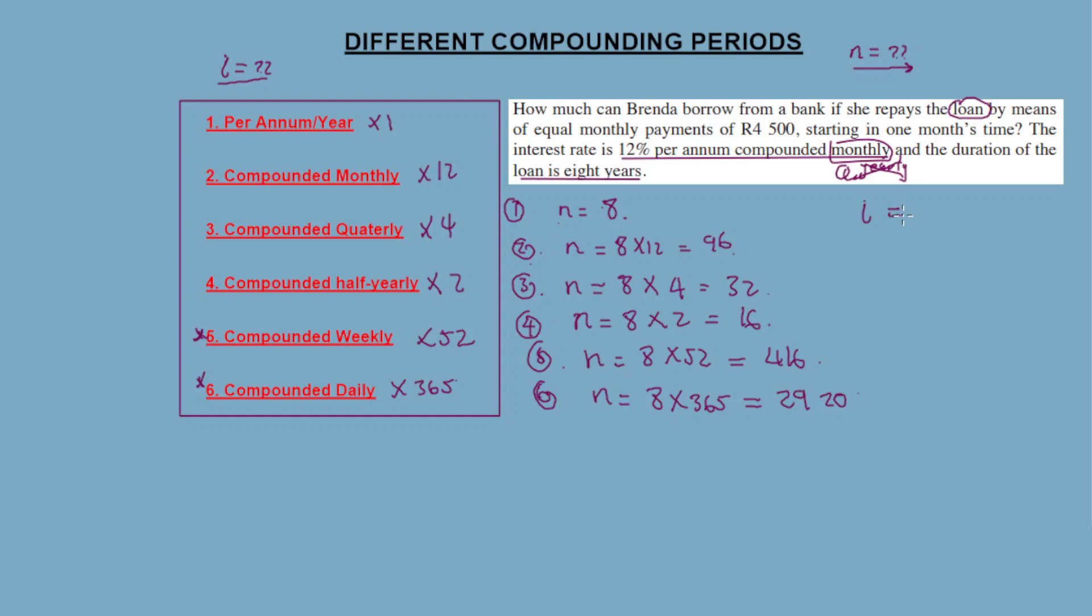What happens to the interest rate? For number 1, you don't divide it at all. For number 2, we divide by 12. Number 3, quarterly, we divide by 4. Number 4, half yearly, we divide by 2.